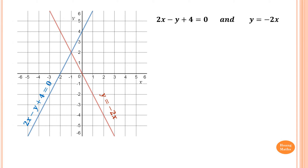Find the intersection of 2x - y + 4 = 0 and y = -2x. Please stop the video and do it yourself. The intersection of these two lines is here. The x value is negative 1, so x = -1, and y = 2.